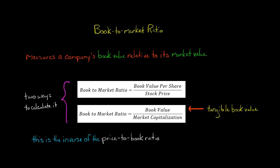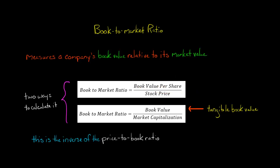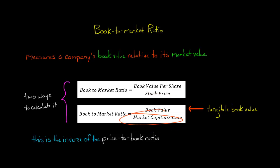First, you can take a company's book value per share and divide it by the market value per share, also known as the company's stock price. The second way is to take the total book value of the company and divide it by the company's market capitalization. A company's market capitalization is just the number of common shares outstanding times the company's stock price.